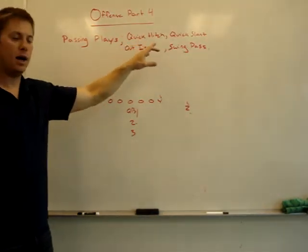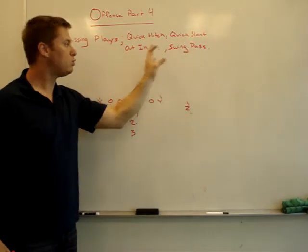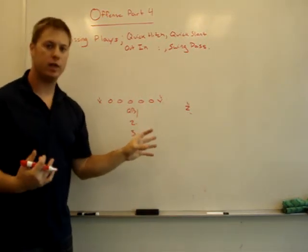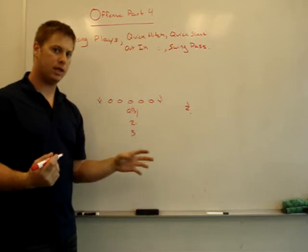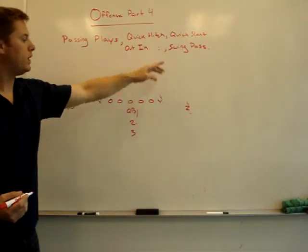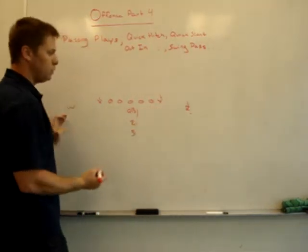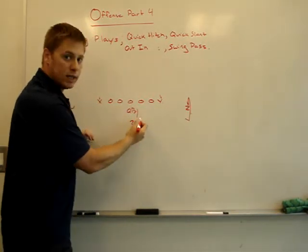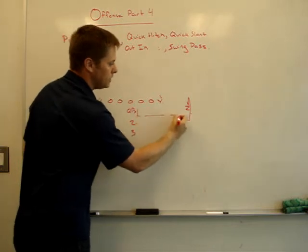So the first one is quick hitch. All of these routes are kind of designed with shorter throws in mind that can be done fairly quickly, just keeping in mind the arm strength of the kids that we're coaching. So quick hitch is to the Z or the W. They're going to take a step upfield and then come back and catch the ball. The quarterback takes one step back, throws the ball to Z.